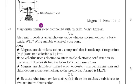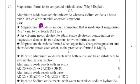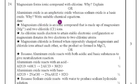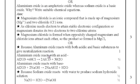Twenty-fourth question: magnesium forms an ionic compound with chlorine — explain why. Or: aluminium oxide is an amphoteric oxide whereas sodium oxide is a basic oxide — explain why with suitable chemical equations. Answers for both options are provided. You need to learn all the equations for your next final exam. Concentrate on the state level question paper.